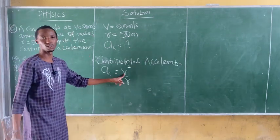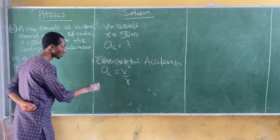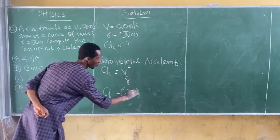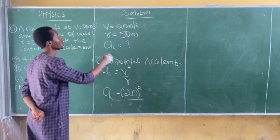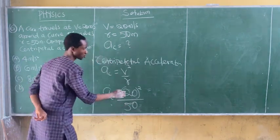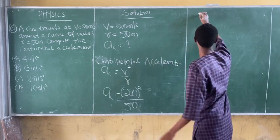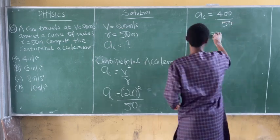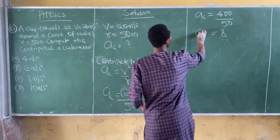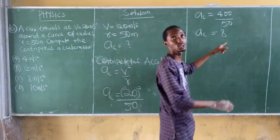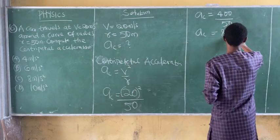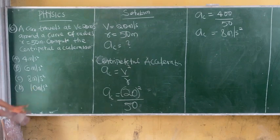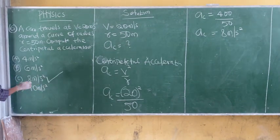Substituting the values: AC equals 20 squared divided by 50 meters. 20 squared gives us 400. So AC equals 400 divided by 50, which gives us 8. Therefore, the centripetal acceleration is equal to 8 meters per second squared. The correct answer is Option C, 8 meters per second squared.